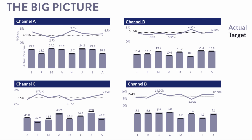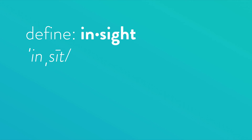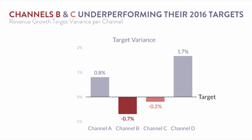We've arrived at — even though it's the second letter in the name — the fourth letter in the process, and that is Insight. We define insight as the capacity to gain an accurate and deep, intuitive understanding of a person or thing. Unfortunately, most charts don't do that. But with the right level of aesthetics and leading people through a story, I think we can. I'm going to start with our target variance chart and start telling the story the way I see it. What we're seeing is that Channels B and C are underperforming their 2016 targets — I've colored both a muted brick-red tone.